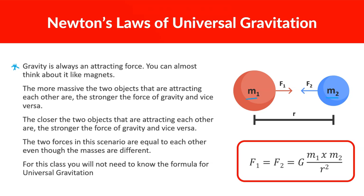Everything that has mass has gravity. The reason we feel the Earth's gravitational pull is because it has a lot of mass. The more massive the two objects attracting each other are, the stronger the force of gravity. The closer the two objects are, the stronger the force of gravity. For example, Saturn is huge — much bigger than Earth — but since it's farther away, we don't feel its gravitational pull.